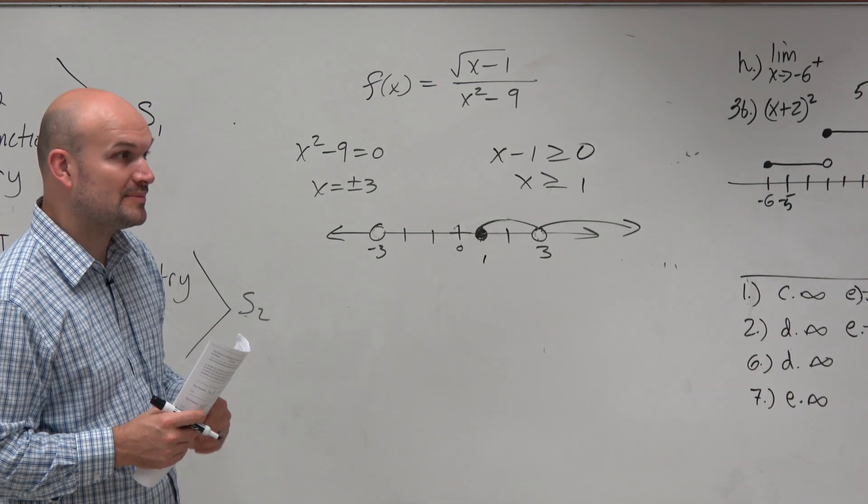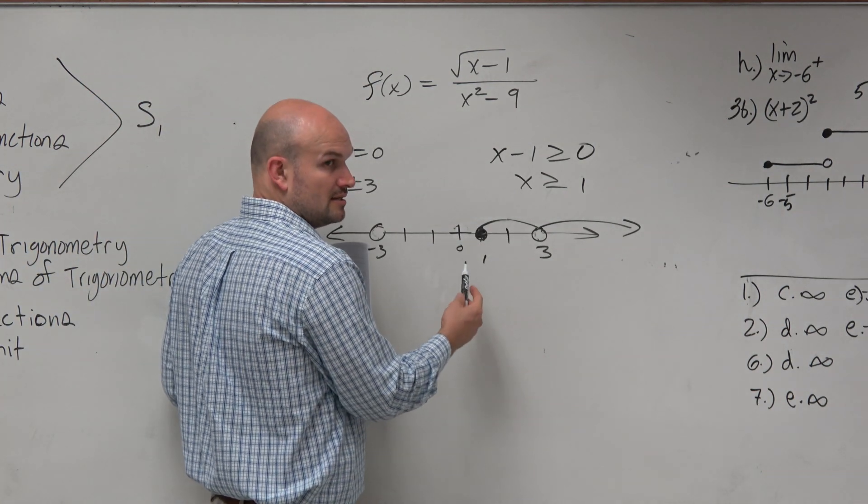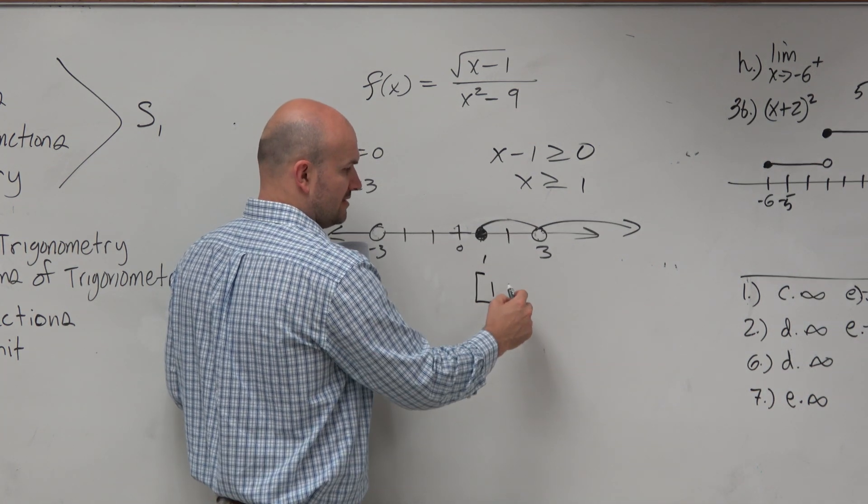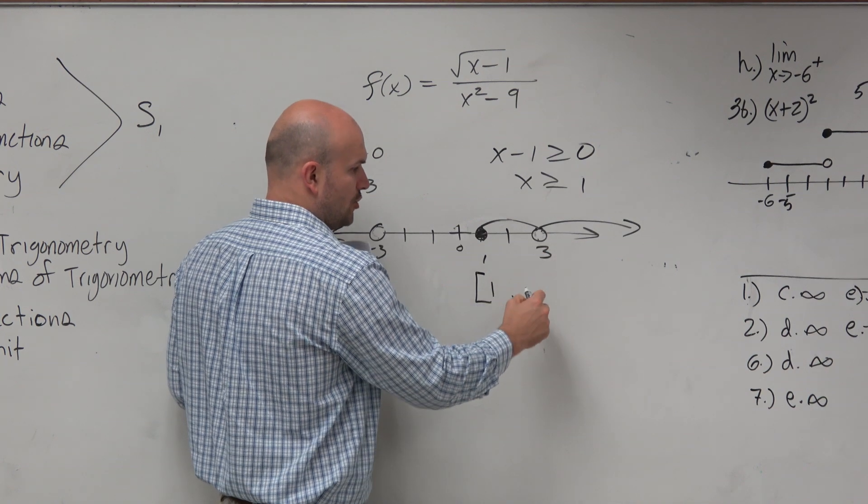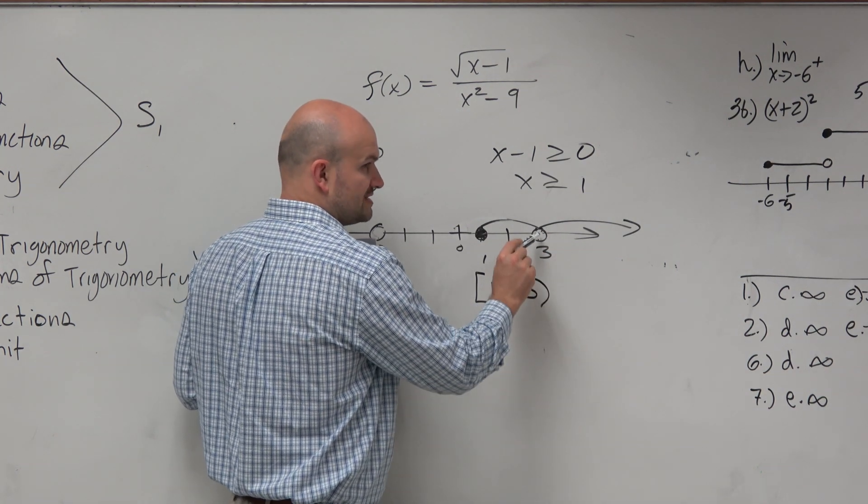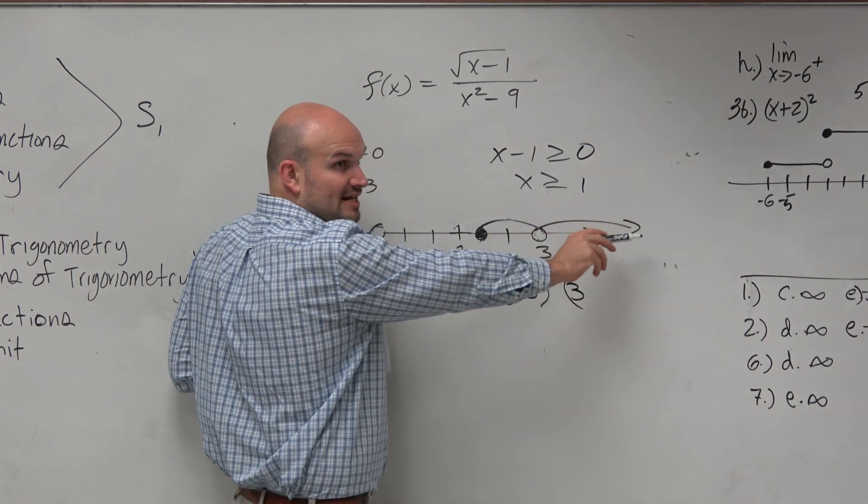Now let's remember the notation. When it's enclosed we use a bracket, so we write [1 to 3). But since 3 is open we use a parenthesis. Then we still have the right side of 3, so we write 3 again with a parenthesis.